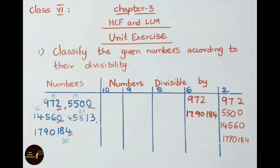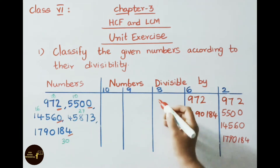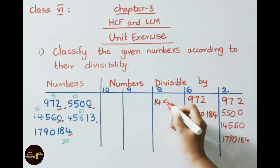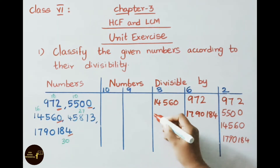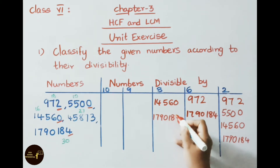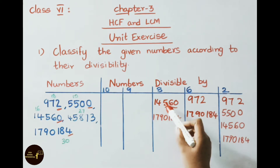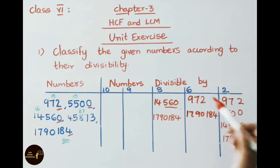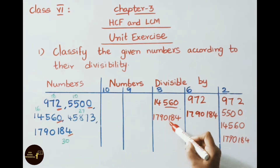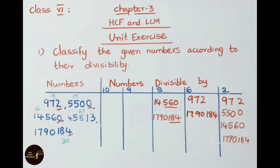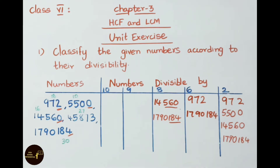Now let us check divisibility by 8. For divisibility by 8, the last three digits must be divisible by 8. For 14560, the last three digits are 560. For 1790184, the last three digits are 184, and 184 is divisible by 8. Therefore 1790184 is divisible by 8.